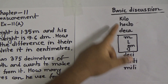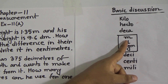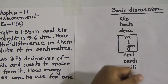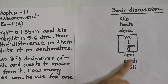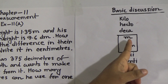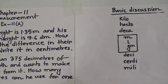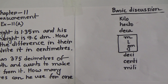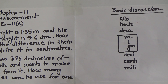Please memorize this with me: kilo, hecto, deca — then meter, liter, gram in the middle — then deci, centi, milli. When we want to measure distance we use meter. When we want to measure the volume of a liquid we use liter. When we want to measure the weight of a solid substance we use gram.